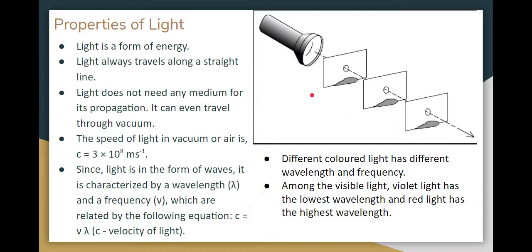Light can travel through a vacuum. But sound requires a medium to propagate. For example, air is a medium — if you remove the air completely, sound cannot travel, whereas light can still travel through the vacuum of space.